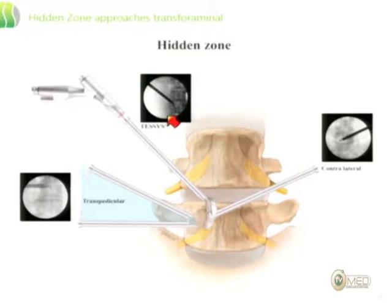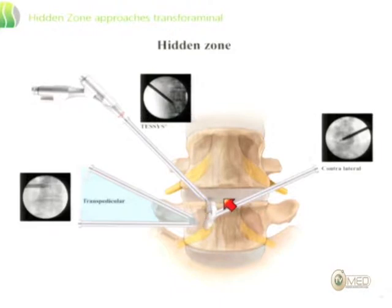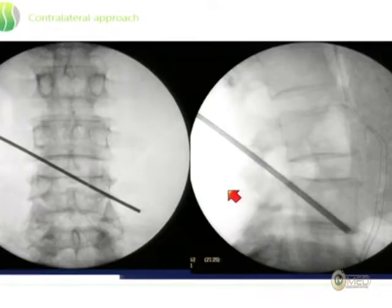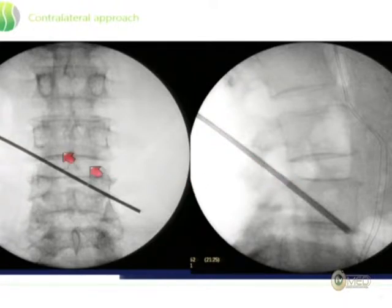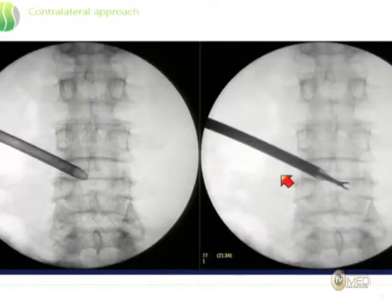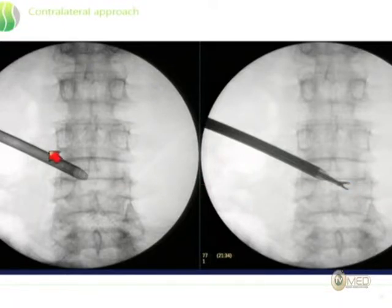The advantage is a good parallel position allowing you to reach the intra- and extra-foraminal area nicely. We also have the problem of hidden zone pathologies — these are the most complex cases. You have to either remove part of the upper pedicle, come from the opposite side, or go through the pedicle to reach them via the transforaminal approach. At L5-S1, this might be a good indication for interlaminar. The contralateral approach is only possible if you have a high area in the foramen; otherwise, you need to perform a foraminoplasty first.